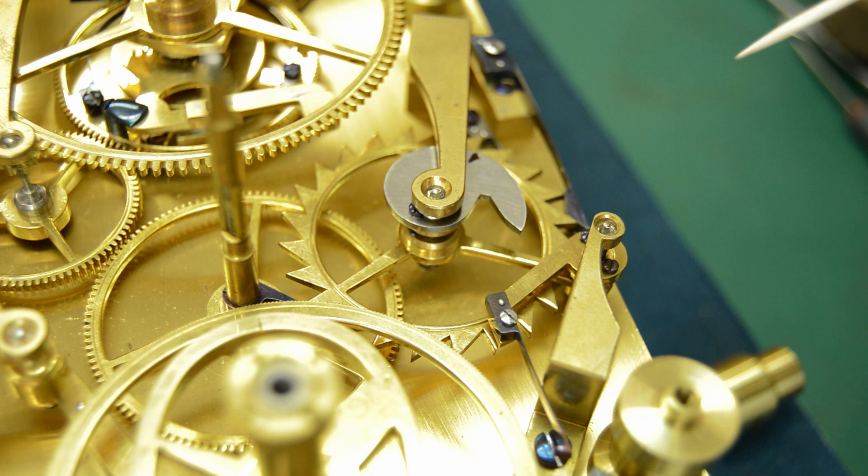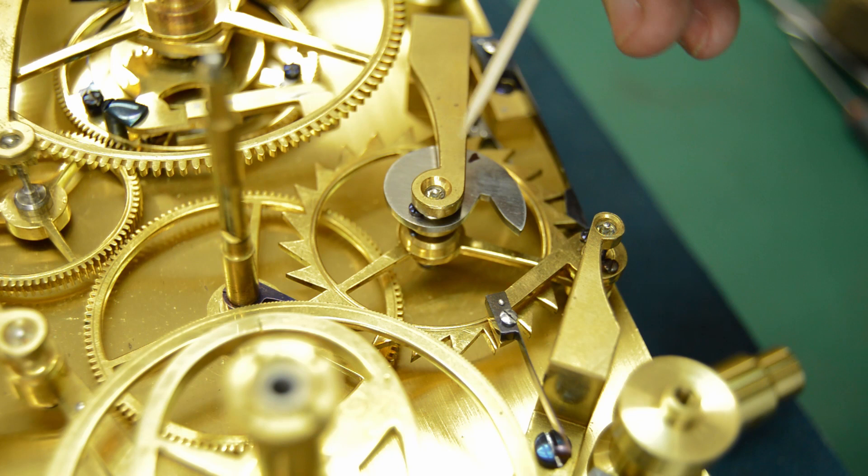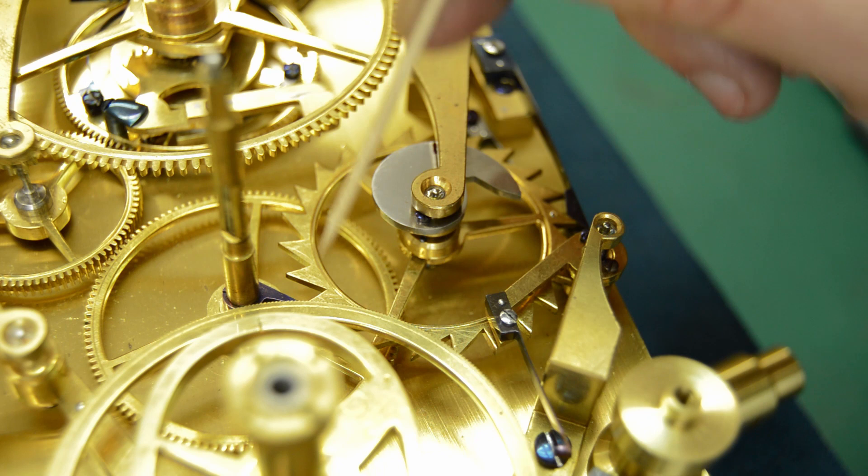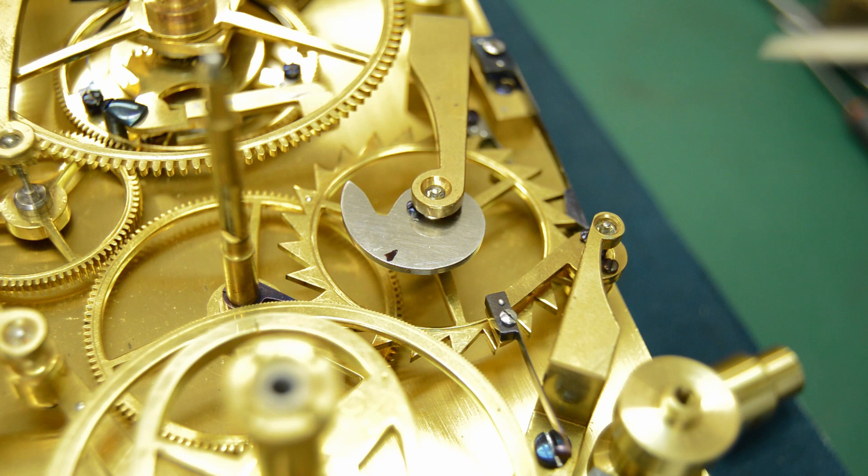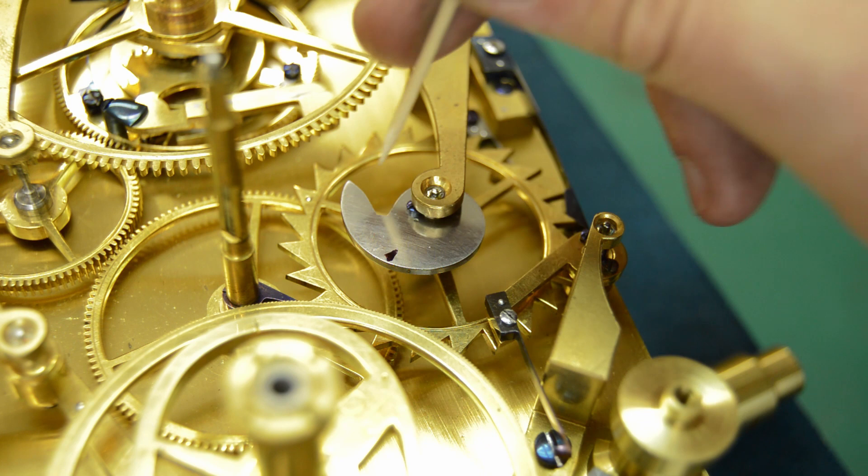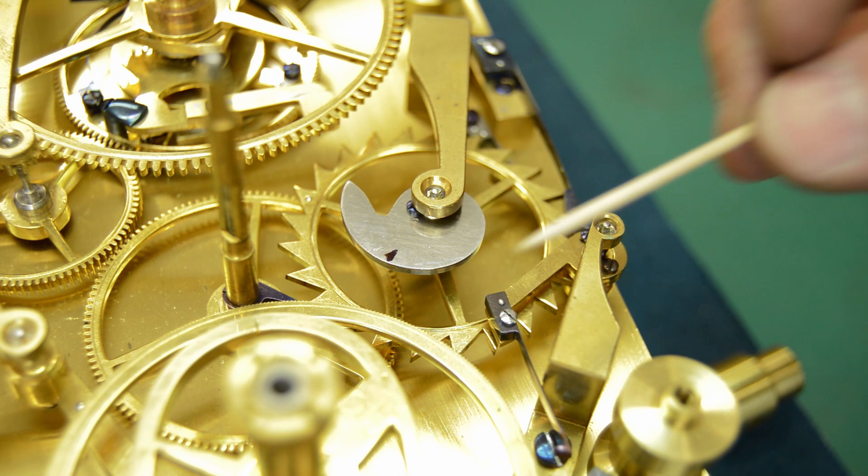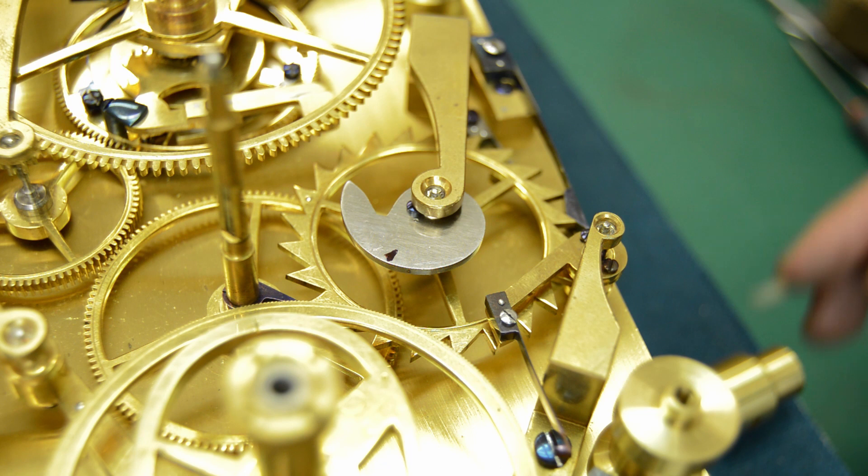And with the calendar plate removed, you can see more clearly the cam that I was referring to. This cam lifts the calendar gravity arm. It's being rotated around once per hour. So it's taking all of that lift that the calendar requires, all of that energy, it's spreading it over a 24 hour period, which is again a nice feature because it means that the clock isn't having to drag itself almost to a stop every 24 hours when it's lifting the calendar and doing all that work. It's spreading it out over a period.